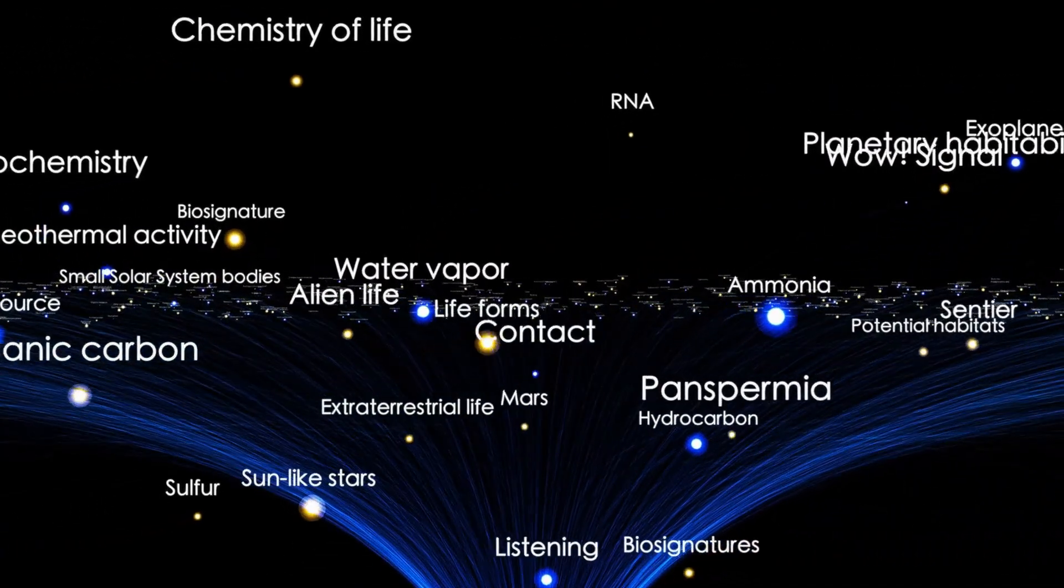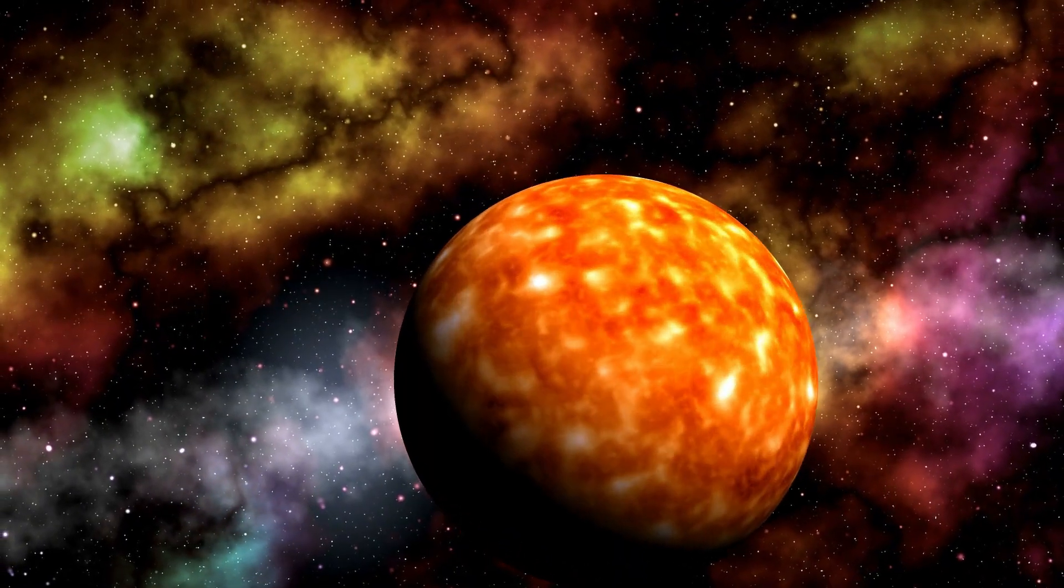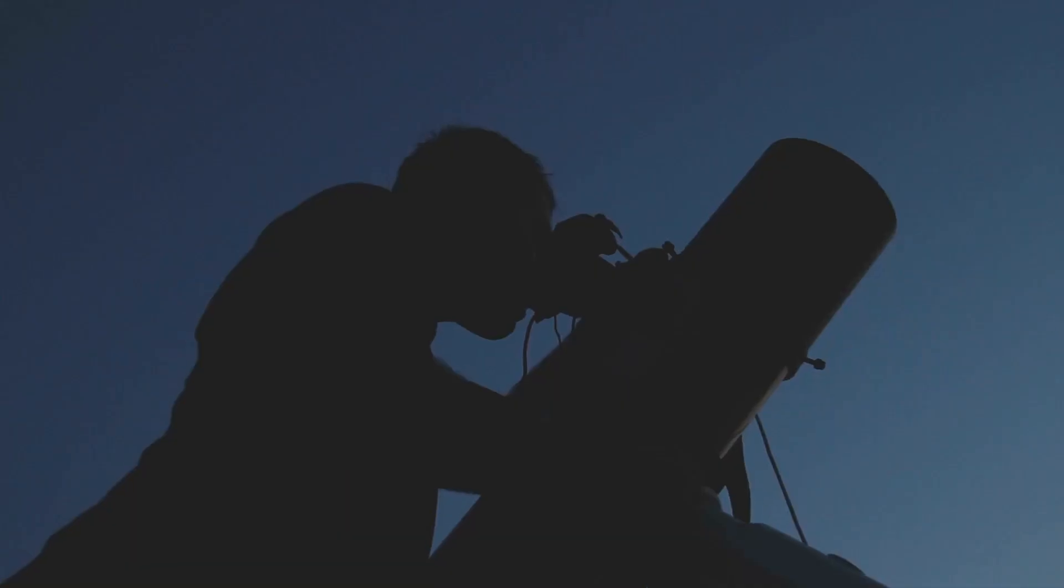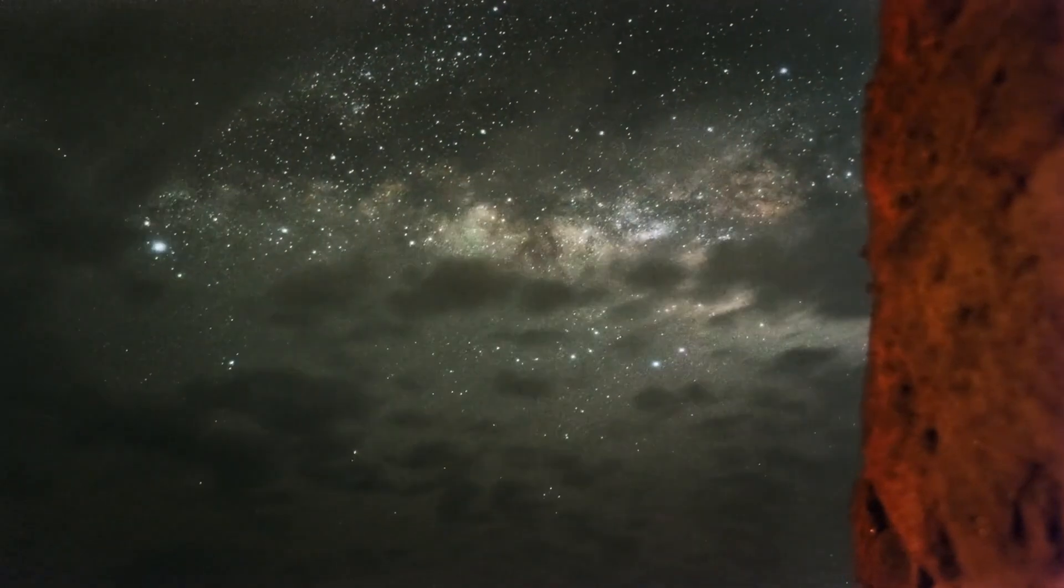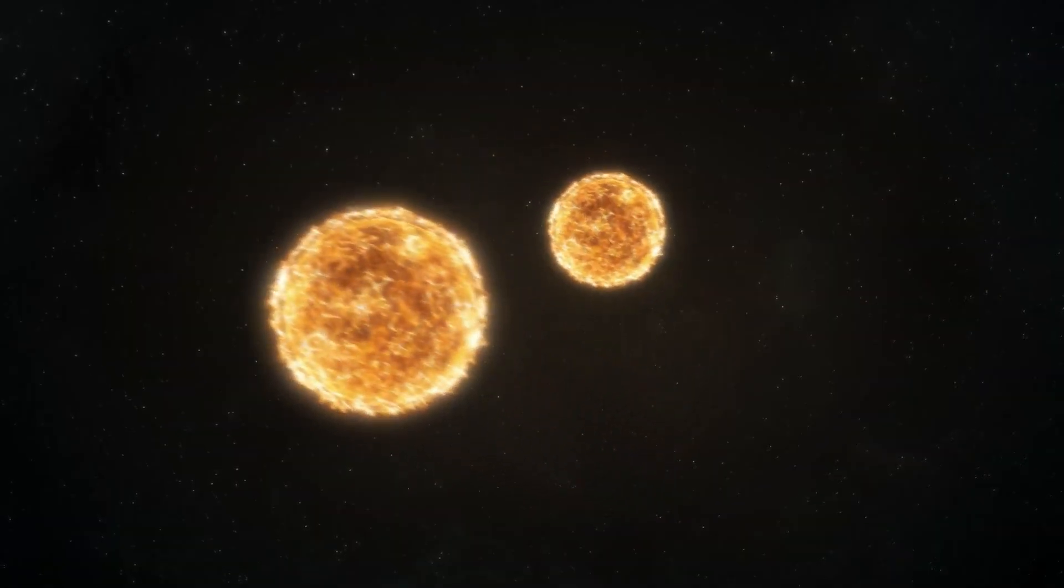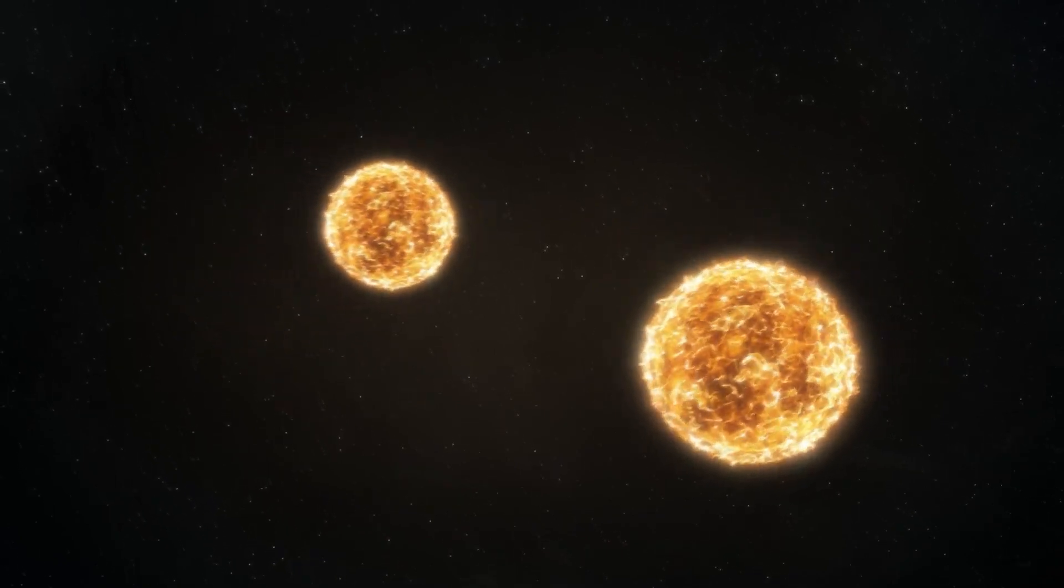For one, Betelgeuse appears to be spinning faster than anyone expected. That's unusual for a star of its size and stage in life. One theory suggests that Betelgeuse might have swallowed a smaller companion star at some point in the past. That would have transferred angular momentum to Betelgeuse, increasing its rotation rate, much like how an ice skater spins faster when pulling in their arms.